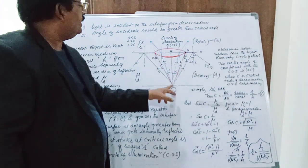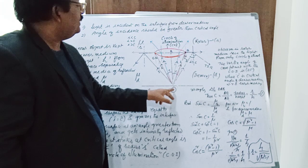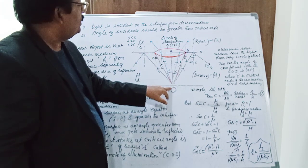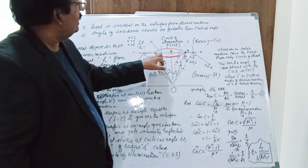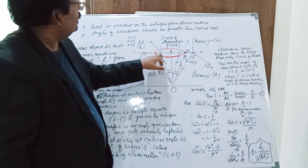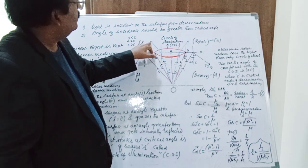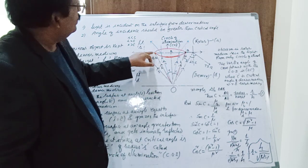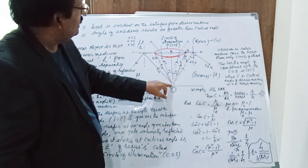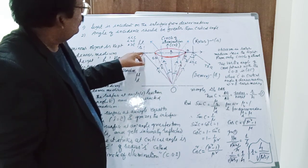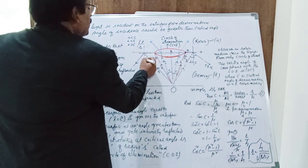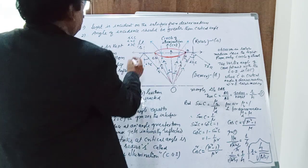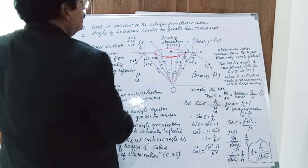On the other side as well, three rays proceed from the illuminated object. The first ray is incident at an angle less than the critical angle, so it moves away from the normal. The second ray is incident at an angle equal to the critical angle, so it grazes the surface. The third ray is incident at an angle greater than the critical angle, so total internal reflection takes place.